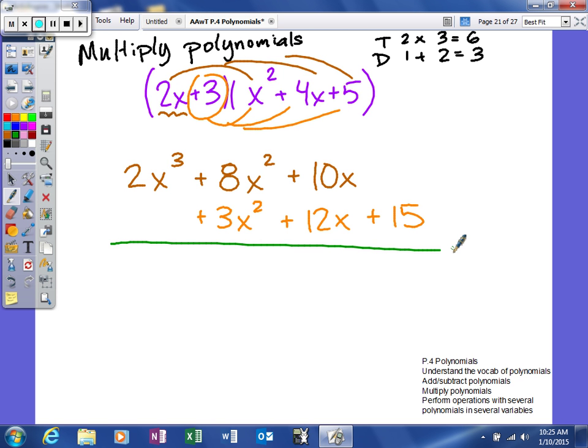Now we're going to combine like terms. So our answer, 2X to the third, plus 11X squared, plus 22X, and then plus 15. Degree is three, four term polynomial, leading coefficient of two.